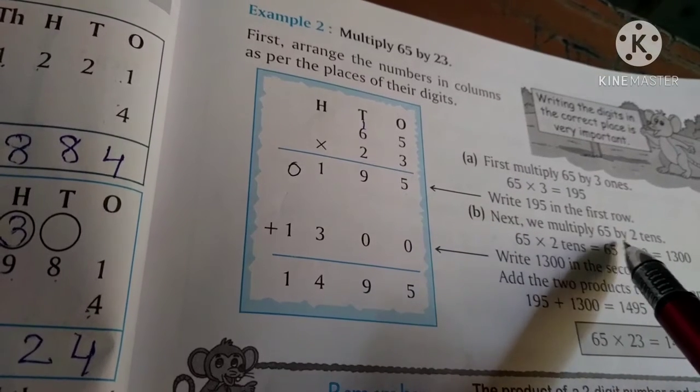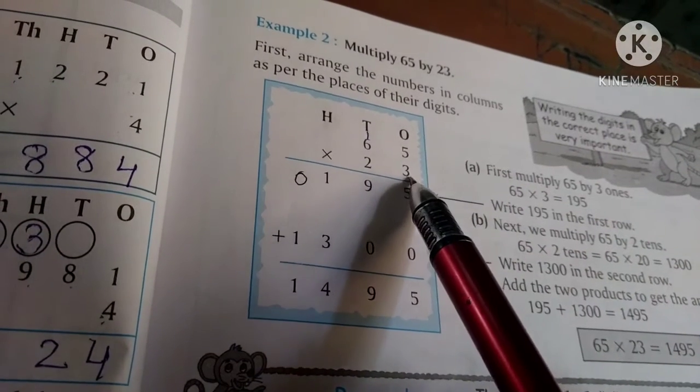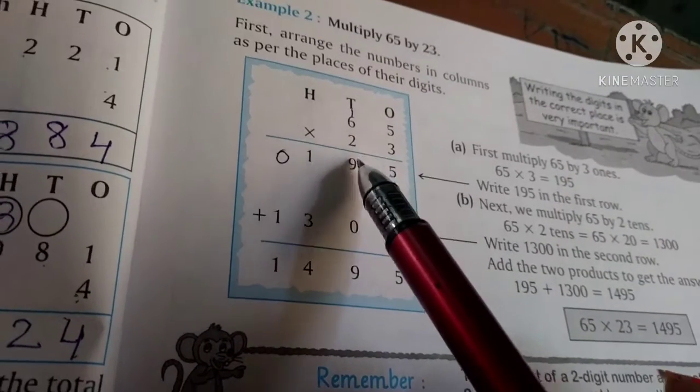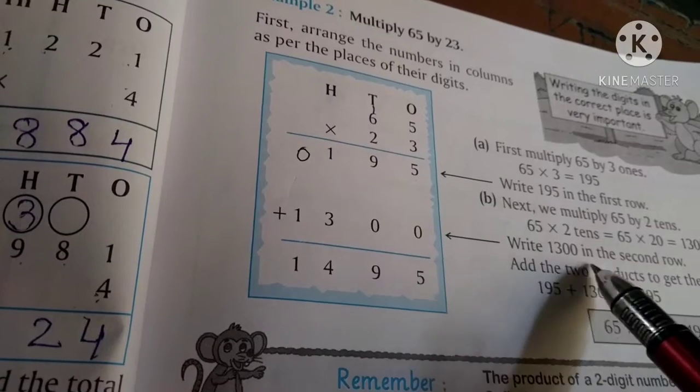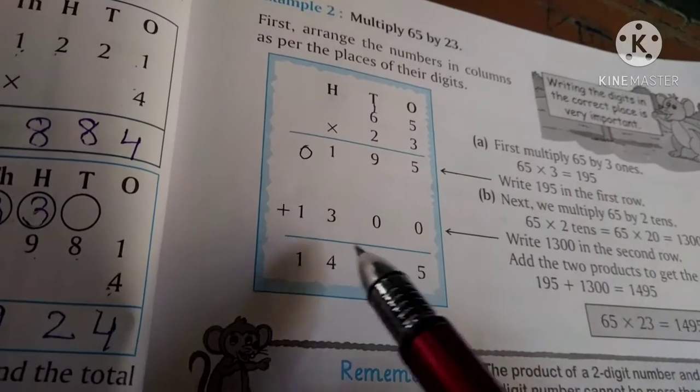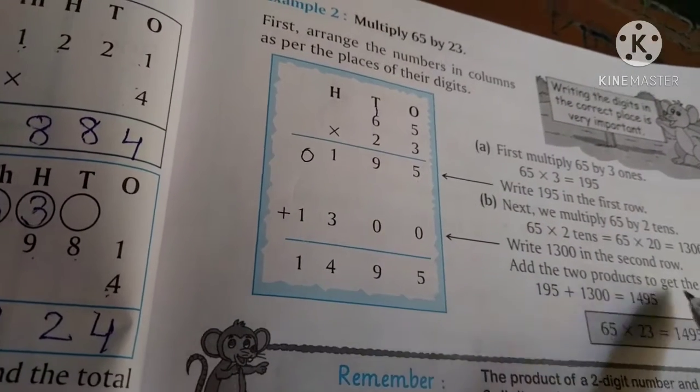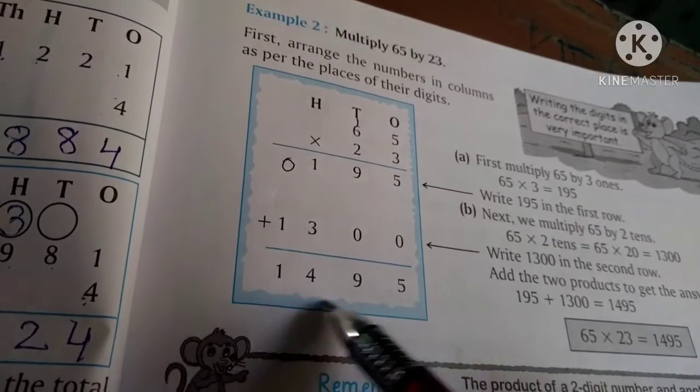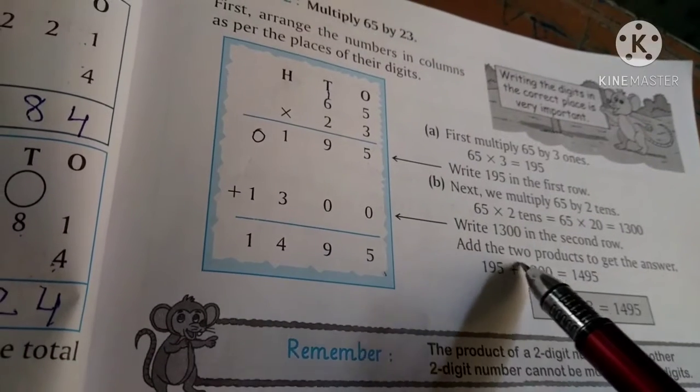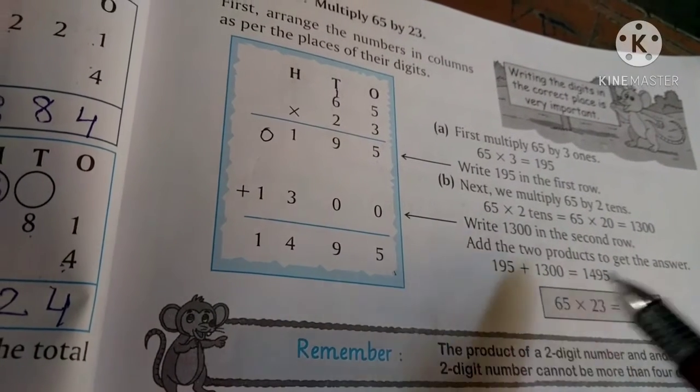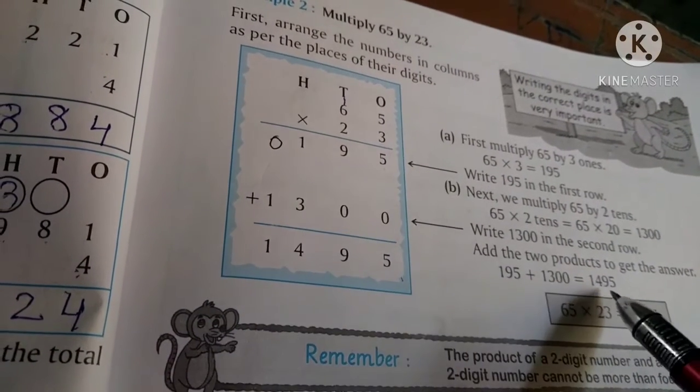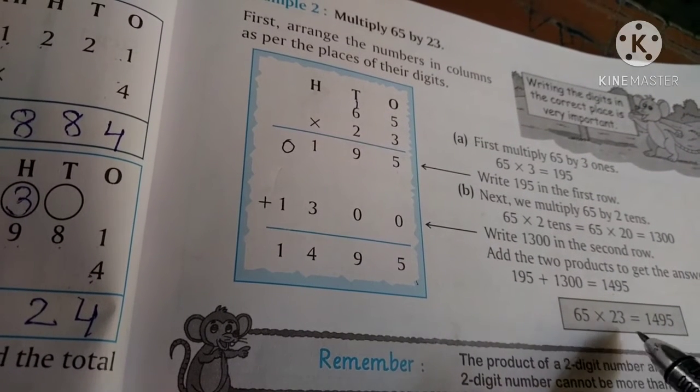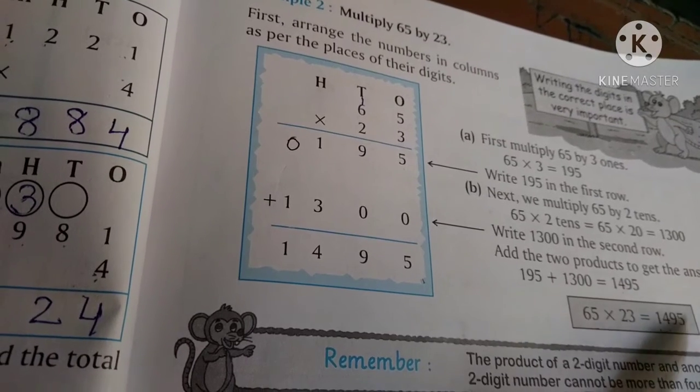Next, we multiply 65 by 2 tens. Don't forget to write 0 first. 5 times 2 is 10, write 0 down and carry 1. 6 times 2 is 12, plus 1 equals 13. So we write 1300 in the second row. Add the two products: 195 plus 1300 equals 1495.